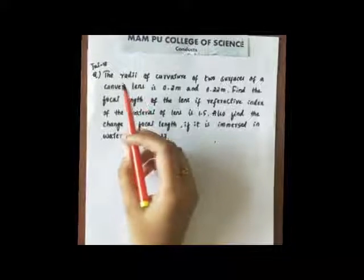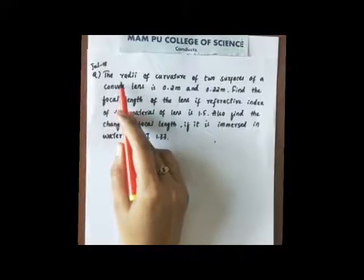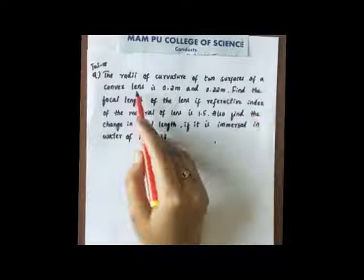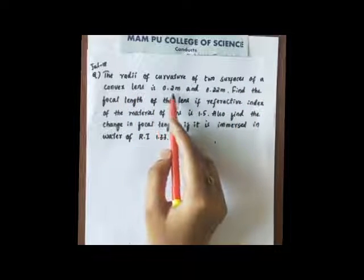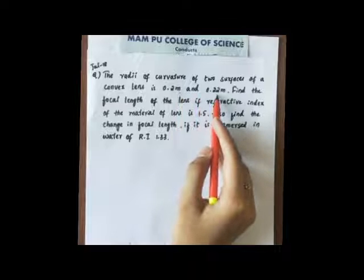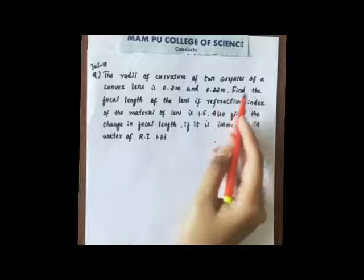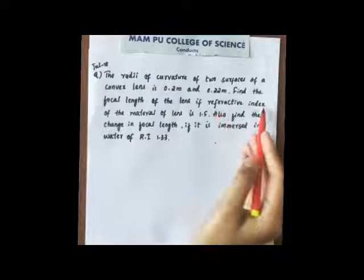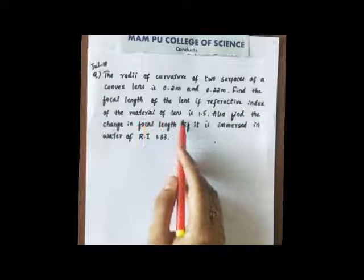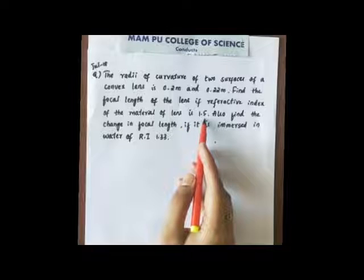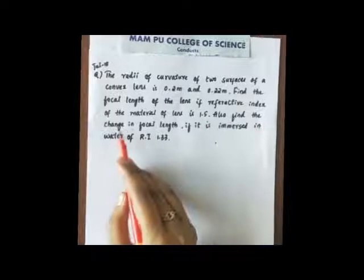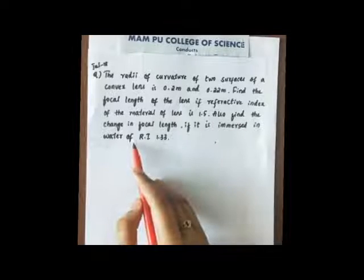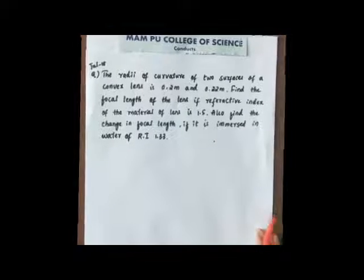The next problem: the radii of curvature of two surfaces of a convex lens are 0.2 meter and 0.22 meter. Find the focal length of the lens if the refractive index of the material of the lens is 1.5. Also, find the change in focal length if it is immersed in water of refractive index 1.33.